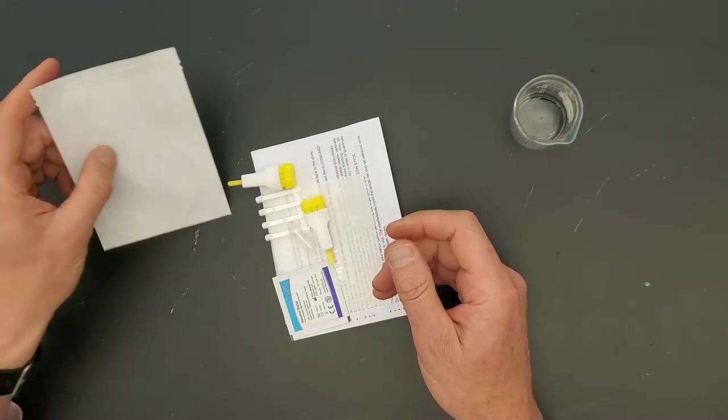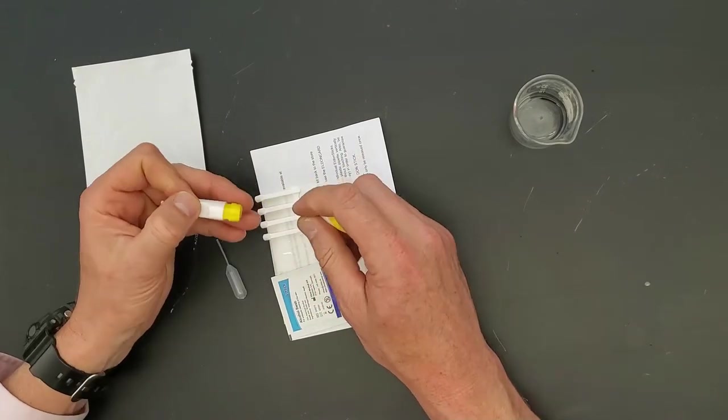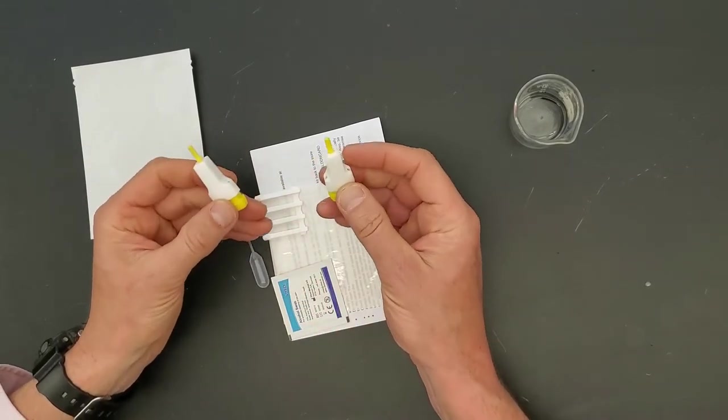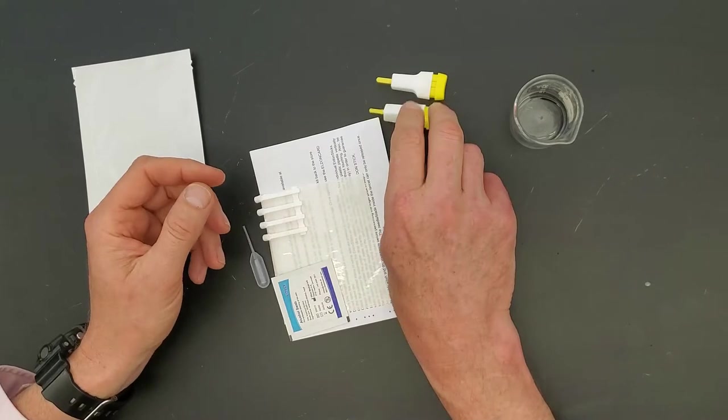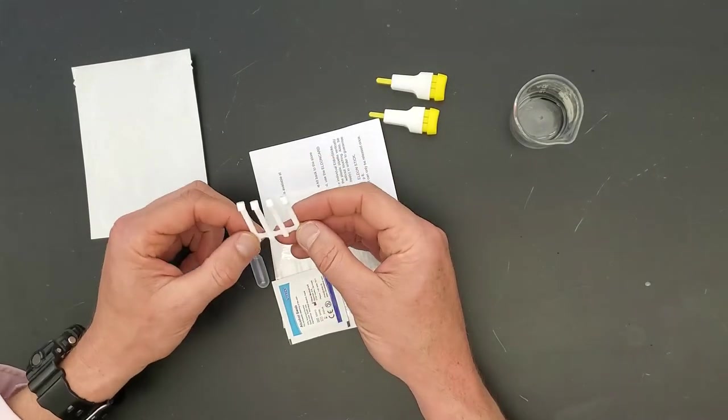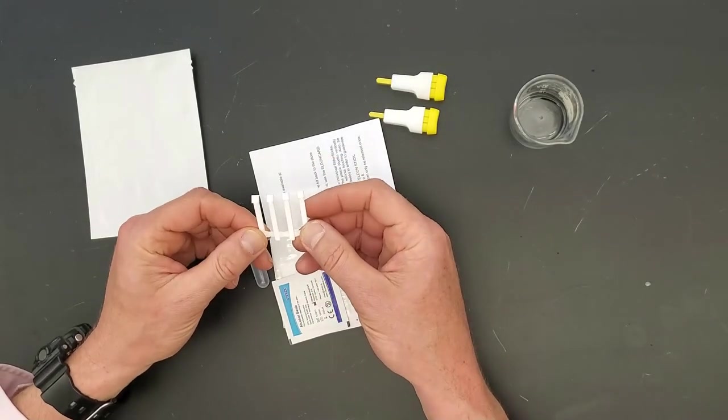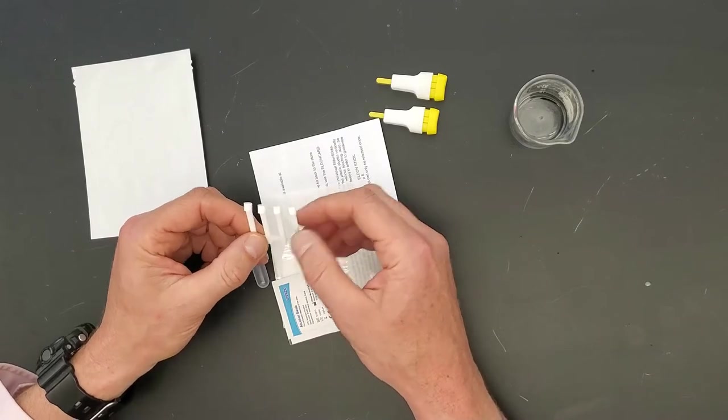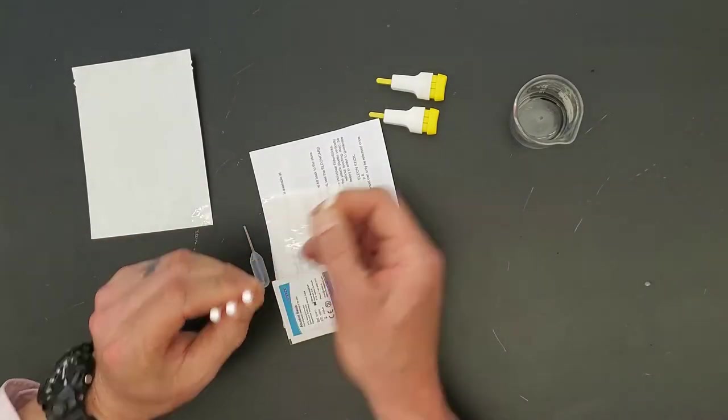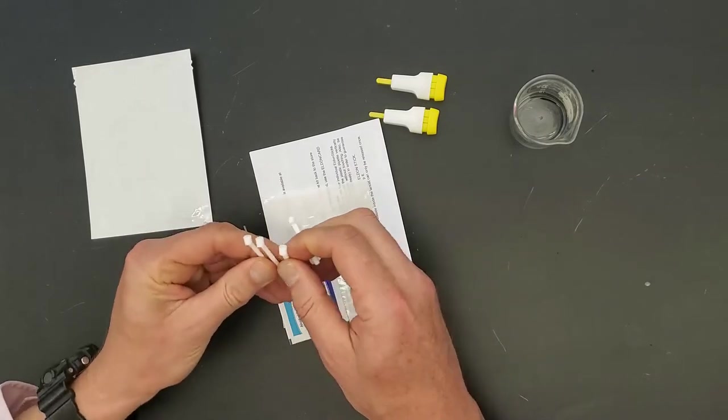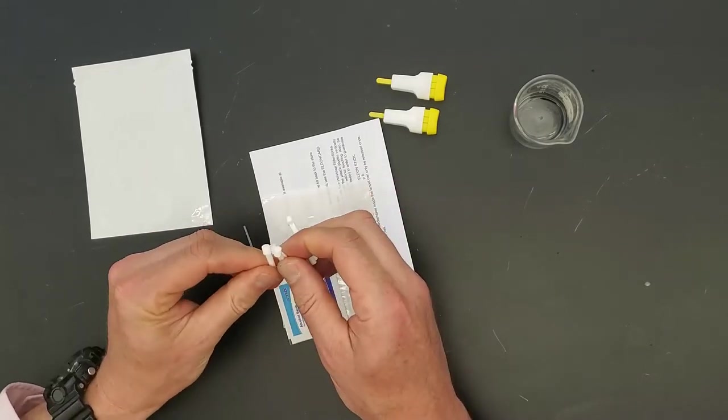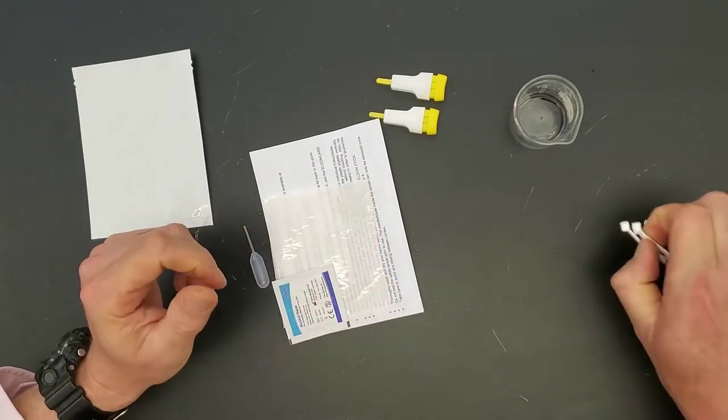Here's all of the contents of the kit. This is the Eldon card. That's what blood typing is going to be done on. I like this new kit because they give you two pokers, just in case you don't poke yourself right. These are the spatulas to apply the blood. I'm going to tear these apart and set them on my clean lab bench.